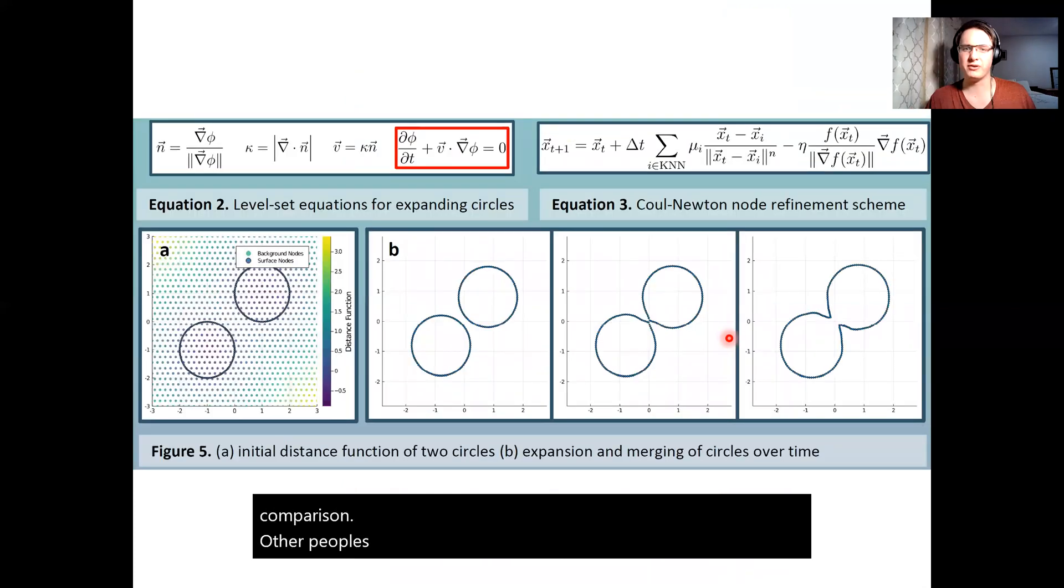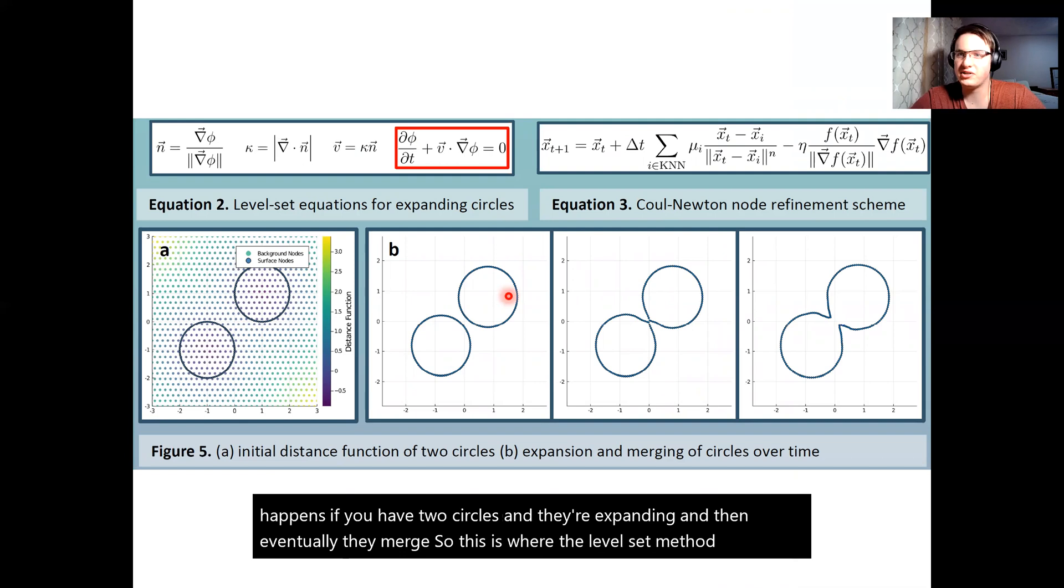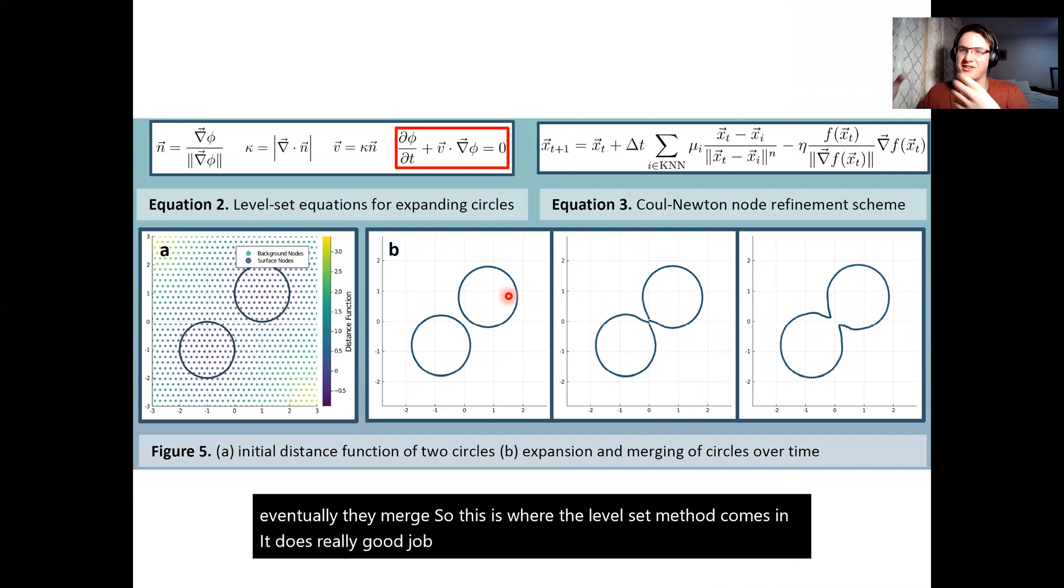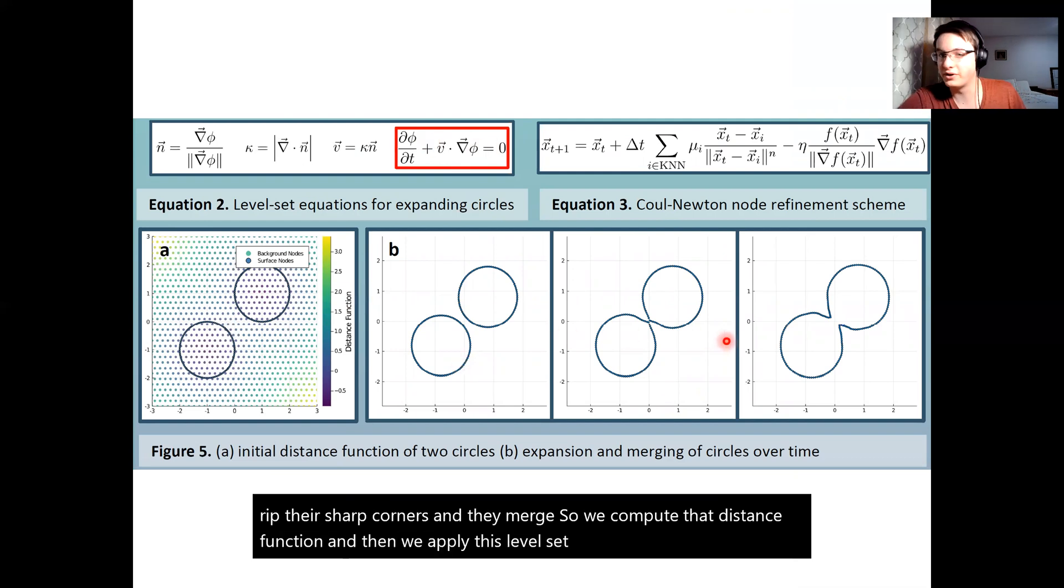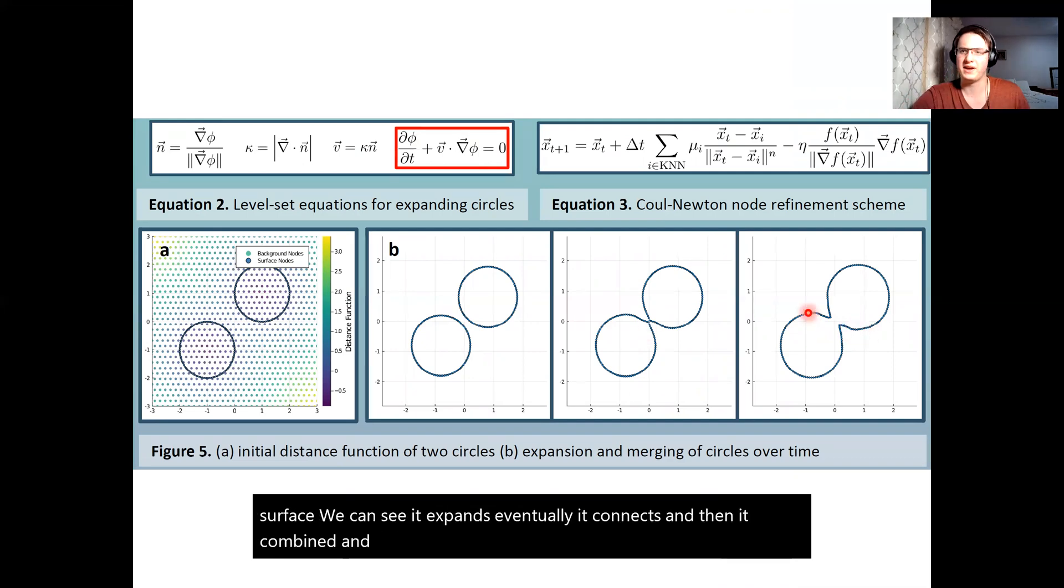Now the harder problem though is what happens if you have two circles and they're expanding and then eventually they merge. So this is where the level set method comes in. It does a really good job at handling changing topologies, things that rip their sharp corners and merge. So we compute that distance function and then we apply this level set equation to evolve our surface. We can see it expands, eventually it connects, and then it combines and actually tears apart in the middle and it's still really sharp there.